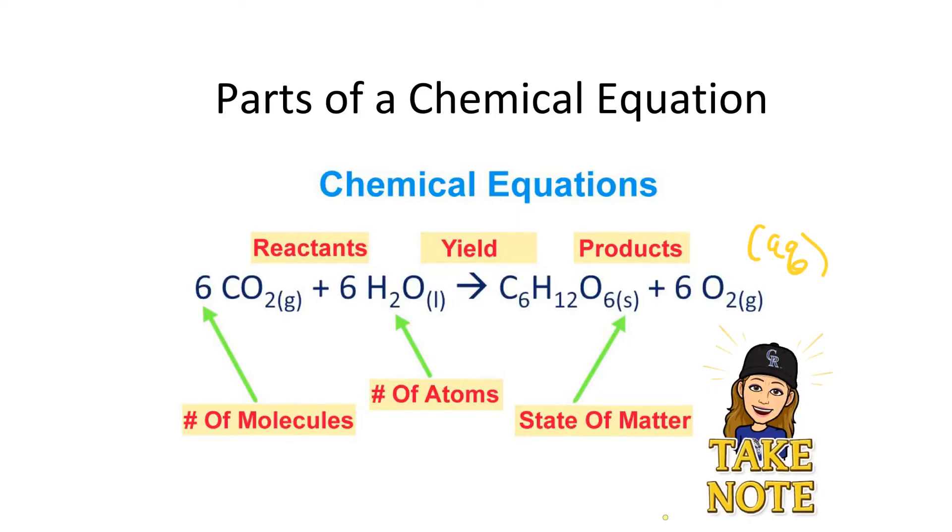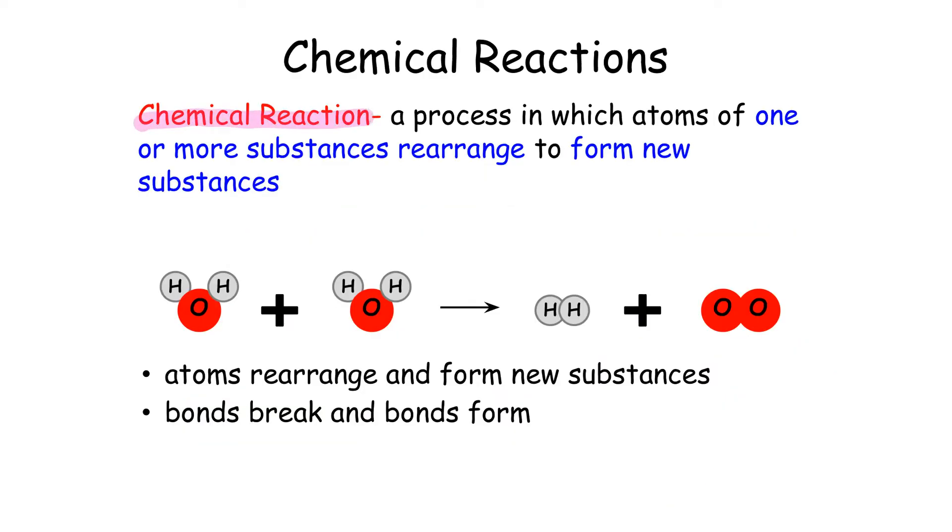A chemical reaction is a process in which atoms of one or more substances rearrange to form new substances. So in this example, we have H2O plus H2O rearranging to get H2 plus O2. So atoms rearrange and form new substances. The bonds break and bonds form in a chemical reaction.